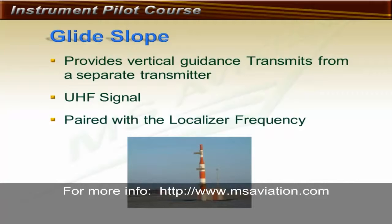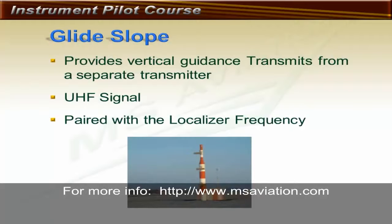The glide slope provides vertical guidance all the way to the missed approach point, and in special cases, all the way to touchdown. The glide slope is not connected to the localizer — it is a separate signal transmitted from the side of the runway and upward. The glide slope uses an ultra-high frequency signal, so its signal will not be usable as far as a localizer signal. Even though the glide slope is unconnected to the localizer, its frequency is paired to the localizer frequency, so when the pilot selects the localizer frequency, the radio automatically tunes its glide slope receiver to the correct glide slope frequency. The glide slope frequency is not displayed to the pilot.